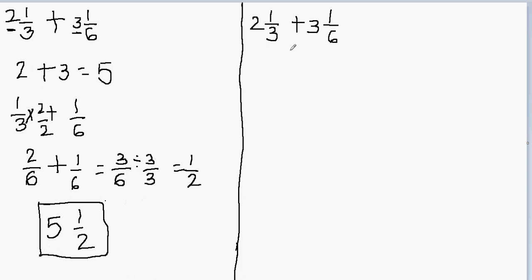Now let's try to add the mixed numbers in a different way, and we'll check if we get the same answer in both situations. Another way is to change the mixed number into an improper fraction first. An improper fraction is when the numerator is greater than the denominator. To convert: multiply the denominator with the whole part, then add to the numerator. So 3 times 2 gives 6, plus 1 equals 7 — giving us 7 over 3.